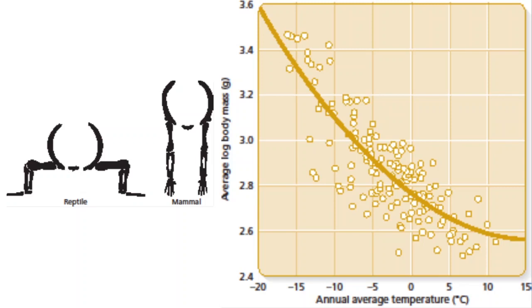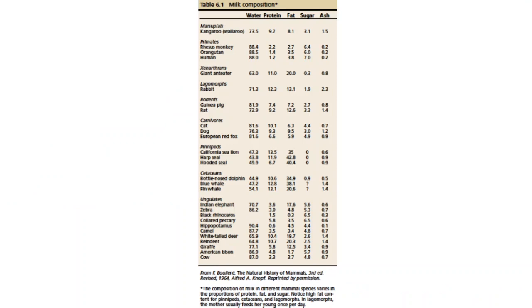The other thing to remember is Bergmann's rule: as temperatures decline, mean body mass goes up. As you move towards the equator, animals tend to be smaller, and as you move towards the poles, animals tend to be larger. This applies not just to eutherians but to metatherians and prototherians as well — monotremes and marsupials follow the same rule.